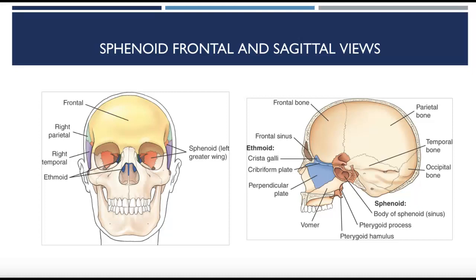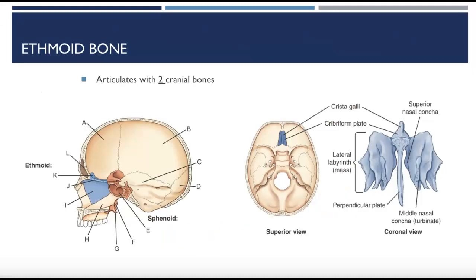This picture shows the sphenoid bone from a frontal and a sagittal view. From the front, the red area behind the eyes is where the sphenoid bone is found. In the sagittal view, the brownish bone right behind the ethmoid bone is where the sphenoid bone sits.